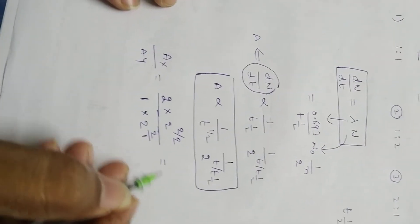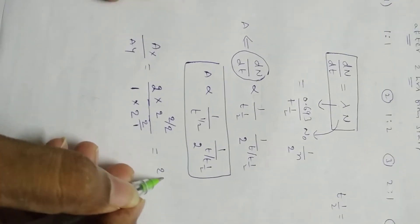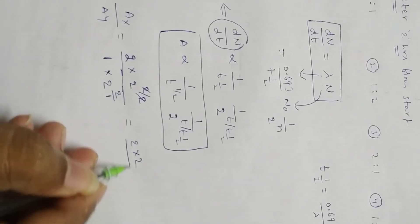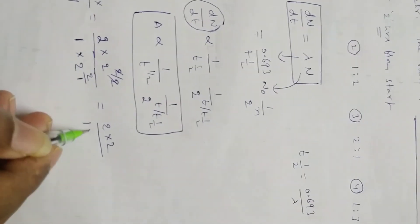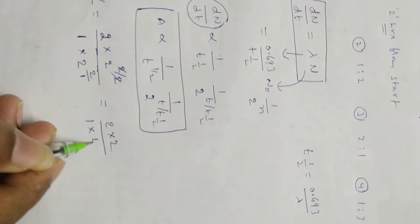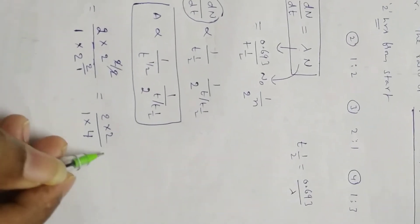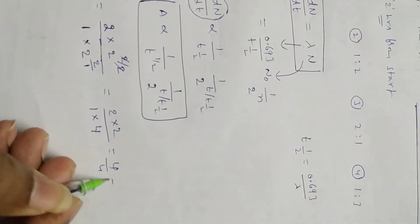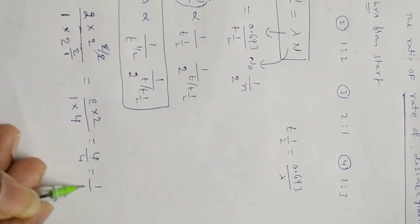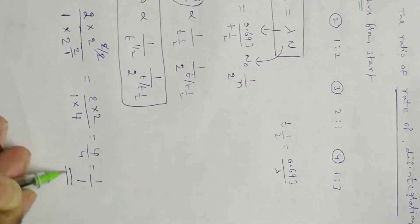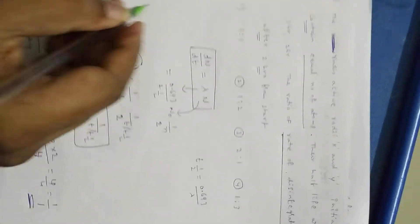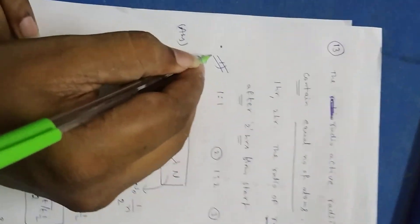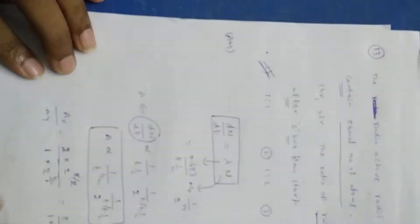Neatly written: 2 into 2, 2 cancels to 1, into 2 squared writes as 4. So 4 by 4, we get 1 is to 1. What is the option? 1 is to 1 - first option.